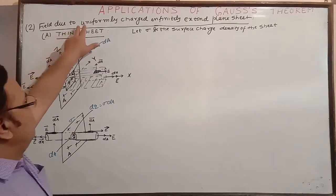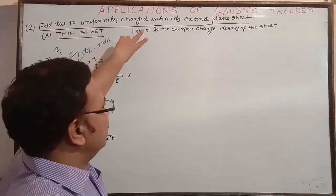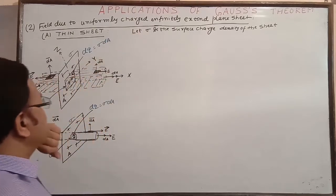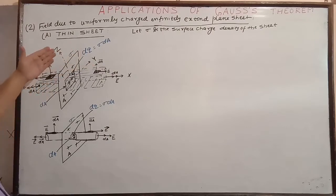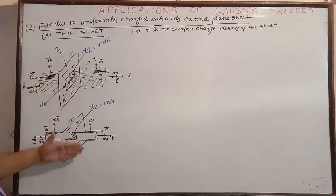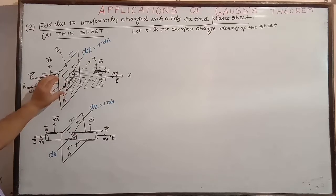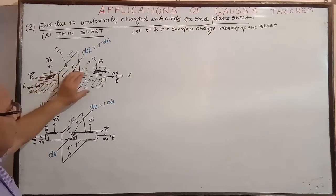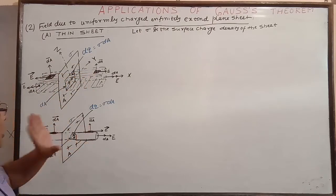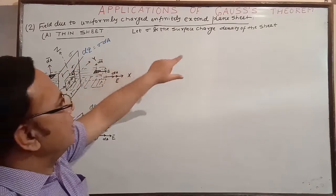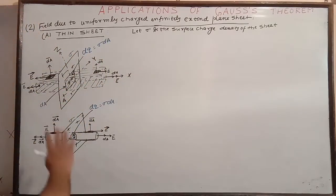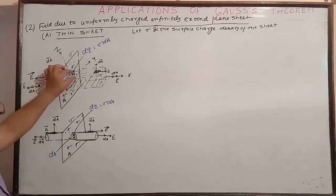The second application is for a formally charged, infinitely extended thin sheet. This thin sheet is shown here. Both Gaussian surface forms — the parallel pipette and the cylindrical form — are equally valid; there is no difference at all. Let us assume sigma is the surface charge density of the infinitely extended sheet. On both sides, this parallel pipette encloses this zone.